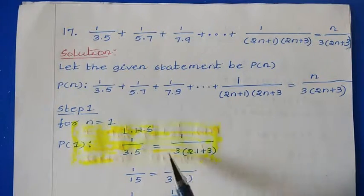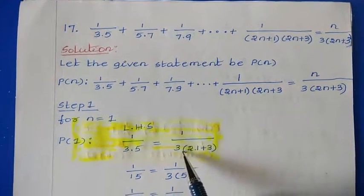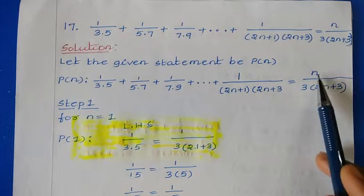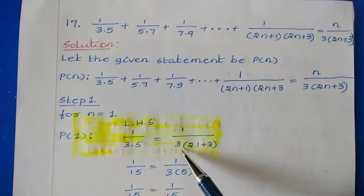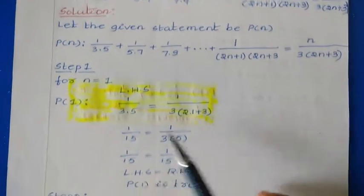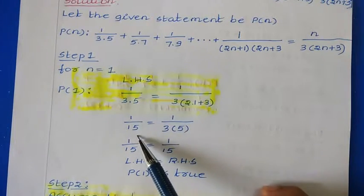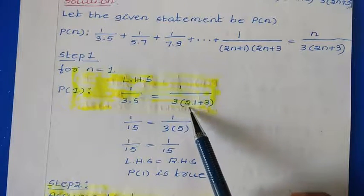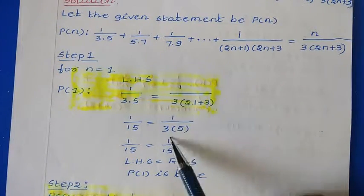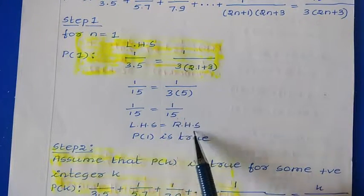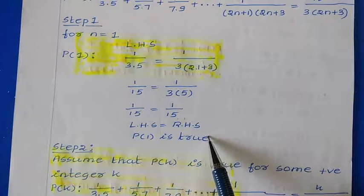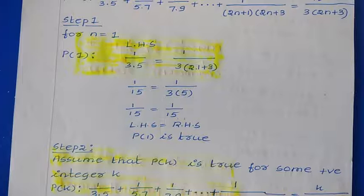1/(3×5) = 1/15. From the right hand side, replacing n with 1: 1/(3×(2×1+3)) = 1/(3×5) = 1/15. So LHS = RHS, meaning the given statement is true for n = 1. As P(1) is true, we can proceed to the second step.